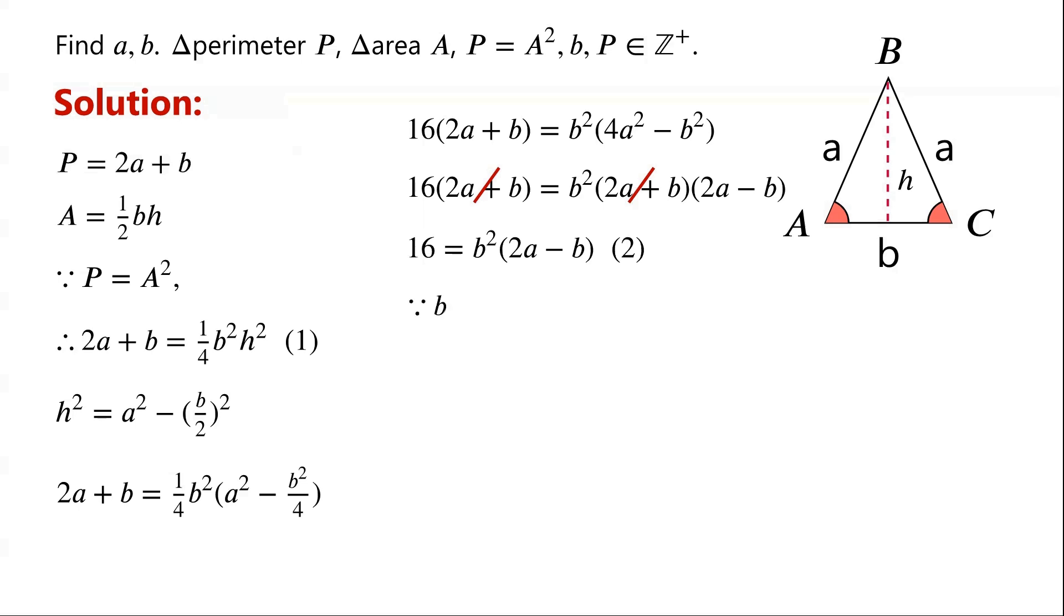We are given that B is a positive integer. So B squared is also a positive integer. 2A minus B can be written as 2A plus B minus 2B, which is equal to P minus 2B. We are also given that P is a positive integer. So 2A minus B is a positive integer. We have showed that both B squared and 2A minus B are positive integers. So equation 2 implies that B squared divides 16, which means that B can take values 1, 2, or 4.